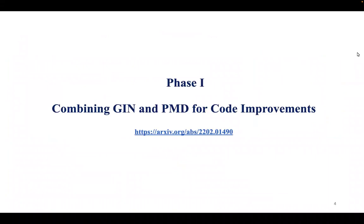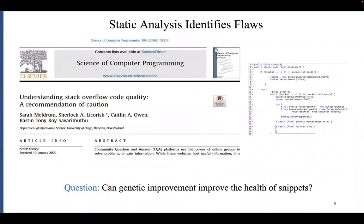So with such issues in mind, what can we do to make the situation a little bit better? We've approached this in two phases. Phase one explored the combination of automated program repair and static analysis in order to improve code. Static analysis can find a very broad range of flaws, ranging from code style issues all the way to security issues. The question we wanted to answer was: can automated program repair techniques, or genetic improvement in particular, improve the health of such snippets so that developers can more reliably and safely use code from repositories?